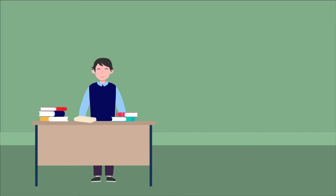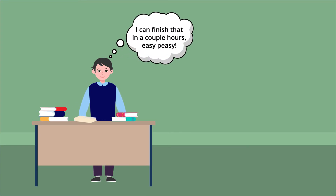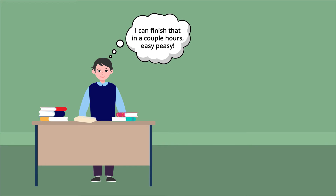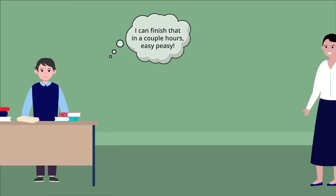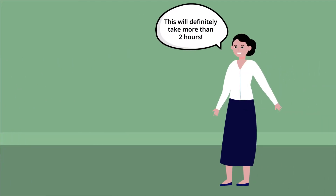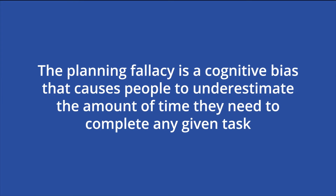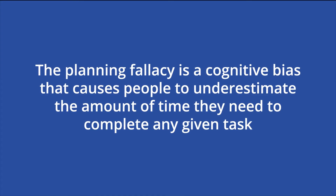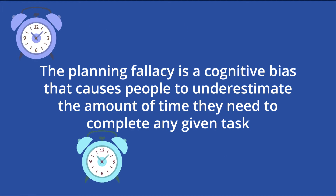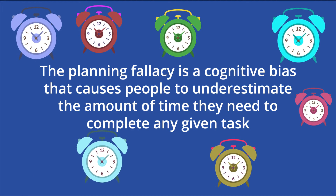Human brains are wired to be overly optimistic when it comes to judging our own efficiency. So the next time you look at a pile of homework and your brain immediately goes, "I can finish that in a couple of hours. Easy peasy," you should know that's an underestimate of the time it will actually take. The planning fallacy is a cognitive bias that causes people to underestimate the amount of time they need to complete any given task.